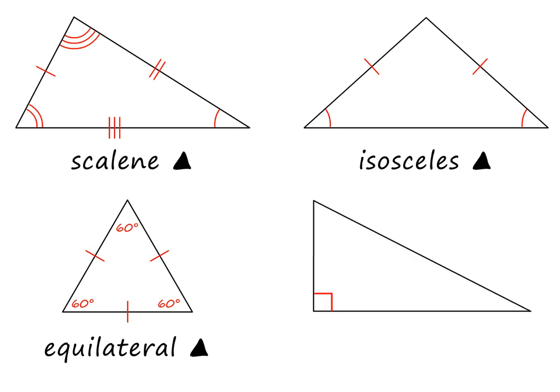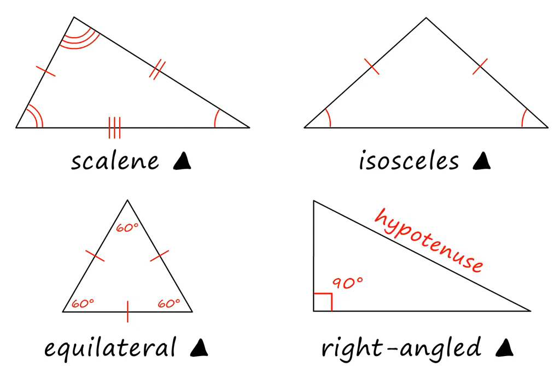And what type of triangle is this triangle? It is a right-angled triangle. This angle is 90 degrees, which is of course the right angle. And the side opposite this angle is called the hypotenuse. Please pause to study this important information.